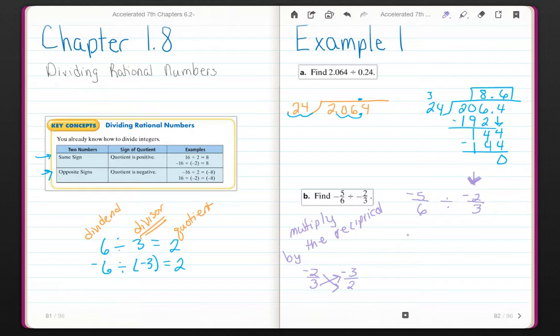Negative 5 sixths times negative 3 halves. I'm going to go ahead and cross cancel, because while 5 and 2 have no common factors, 3 and 6 do. So I'm going to divide by 3, which gives me a 1 and a 2. Multiply straight across. Negative 5 times negative 1, that's a positive. 2 times 2 is 4, which equals 1 and 1 fourth.